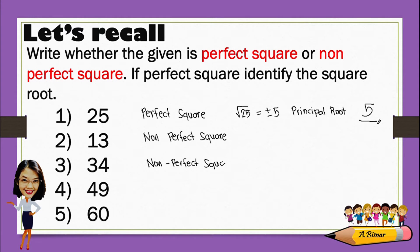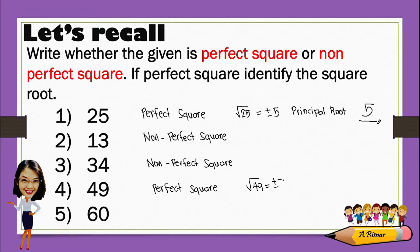Next one is 49. This is a perfect square. This is because the square root of 49 is positive and negative 7. But then again, the principal root will be 7.